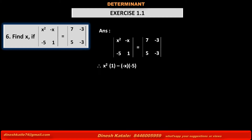The equation becomes x squared into 1 minus minus x into minus 5, using the rule: product of the numbers in the principal diagonal minus product of the numbers in the secondary diagonal. This is equal to similarly 7 into minus 3 minus 5 into minus 3.